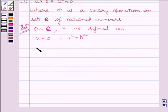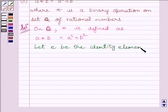Let us assume e is an identity element in Q. Then a star e must equal a must equal e star a.